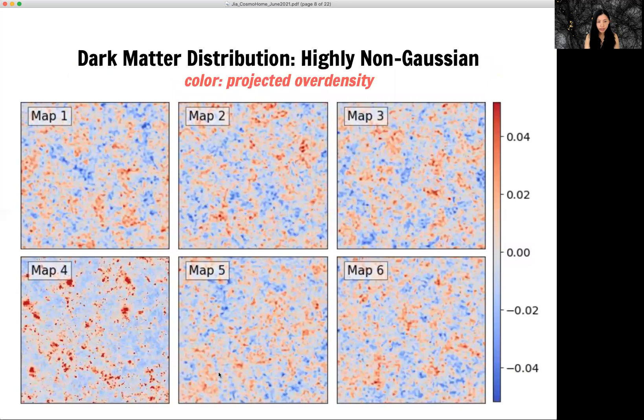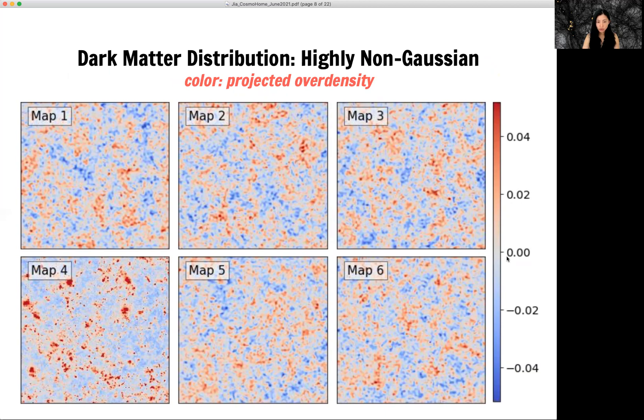For example, here I am showing six maps. They all have the same power spectrum. And this is projected over-density or weak lensing maps.